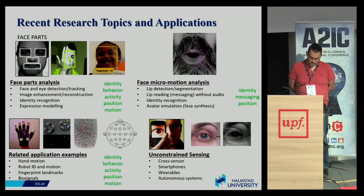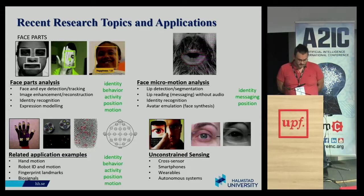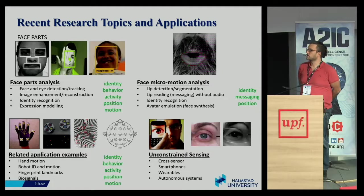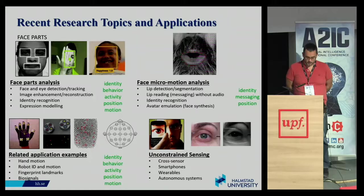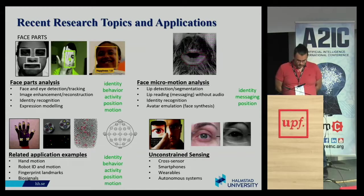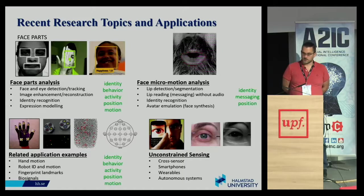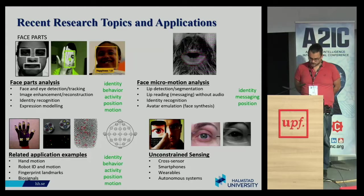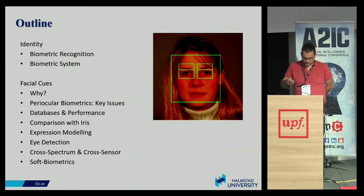Other related application examples on the bottom left that I won't cover include hand motion, robot identity, and motion analysis, where we employ similar techniques to those used in environmental analysis. On the bottom right is the overriding concept we try to concentrate on: unconstrained sensing — for example, the use of smartphones where there is no operator and the person interacts freely, or autonomous vehicles moving freely. I will also present some cross-sensor results later on.